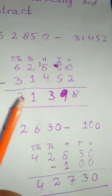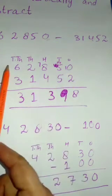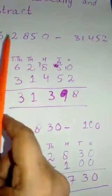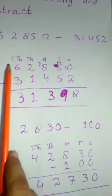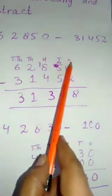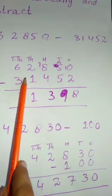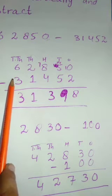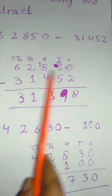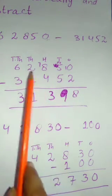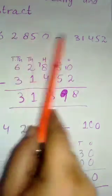Now the subtraction numbers will be arranged in a similar pattern. Write the place values on top and the numbers below. Because the first numbers have equal digits, you can arrange them easily. Always remember the numbers will be written according to their place values. The greater number is written on top and the smaller number at the bottom.